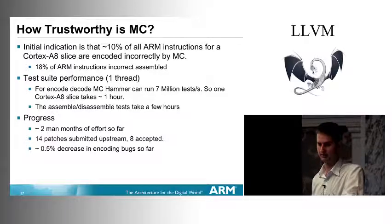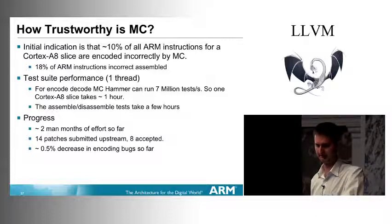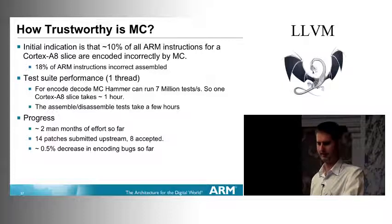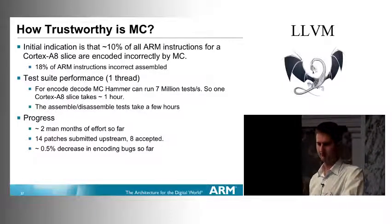What progress have we made? We've put in roughly two person-months of effort fixing bugs turned up by this. We've submitted more than 14 patches upstream with some still under code review. We've seen the encode-decode failures go down by half a percent in two person-months — slow progress. We're creating ARM MC domain experts as we go, which should accelerate things. To be completely honest, this talk came a few months too early to show really interesting results, but we can explain the method.